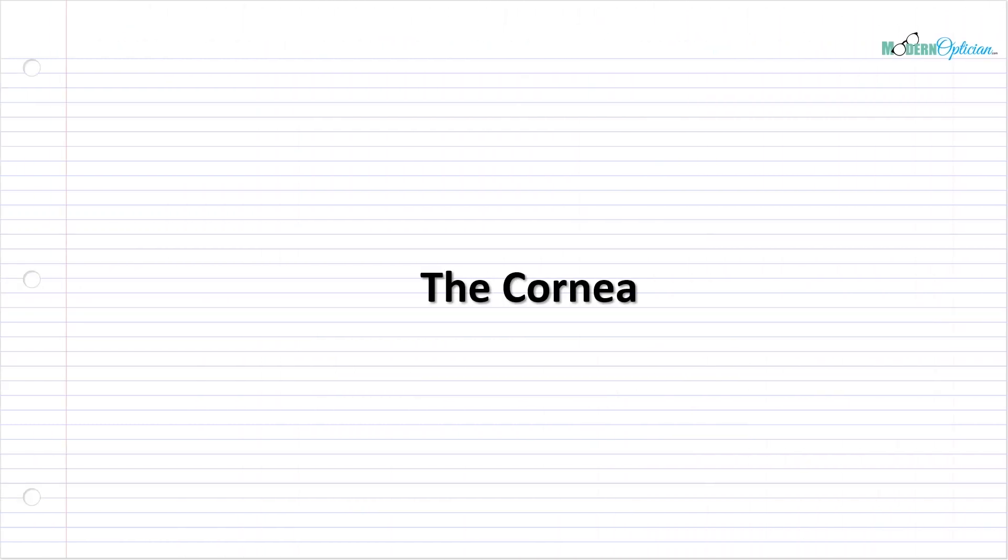As promised, our journey into the different parts of the eye begins. In the previous lecture, we talked about an overview of the eye, where all the parts are, how they connect to each other, their locations, and why that's important. Now we're going to start going through structure by structure, and why not start with, in my opinion, the most important and awesome one, the cornea.